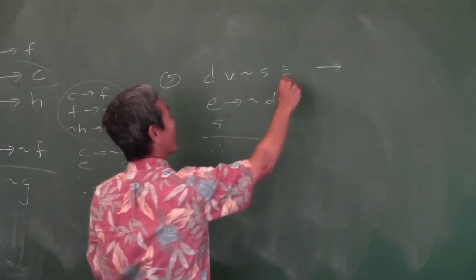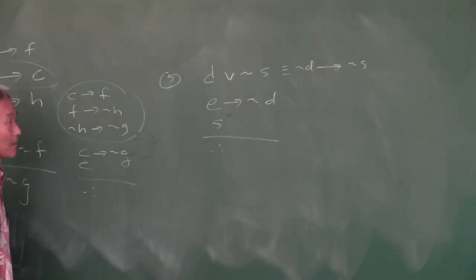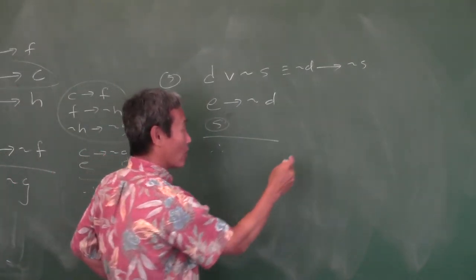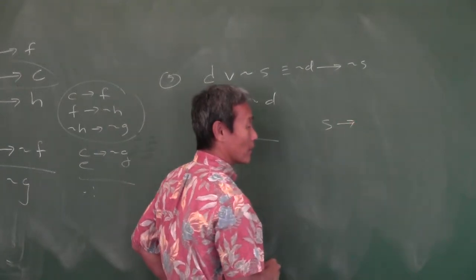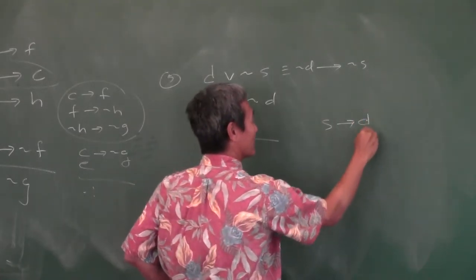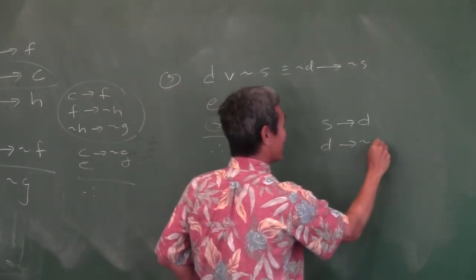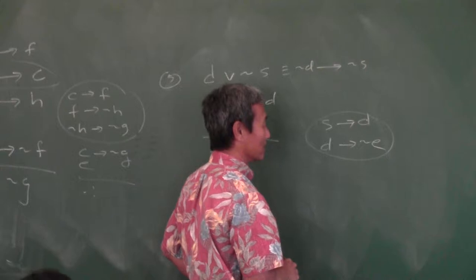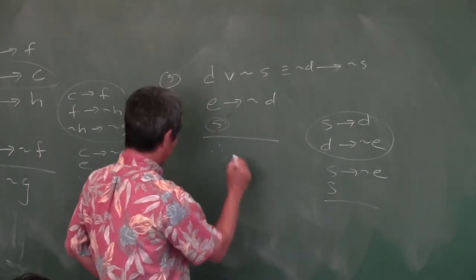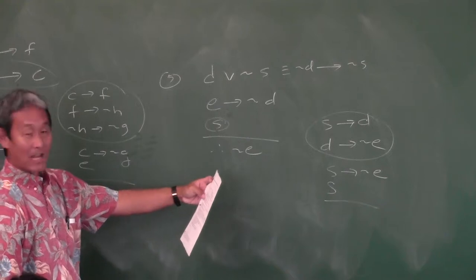Negate the first, leave the second one alone — this is like the third or fourth time today. Now notice you have S given, so use modus ponens: start with S implies something. The contrapositive of the first gives S implies D. Then the contrapositive of the second gives D implies NOT E. So S implies NOT E. S, therefore NOT E — math is not easy.